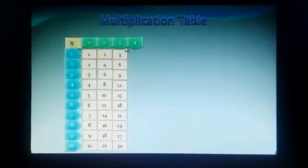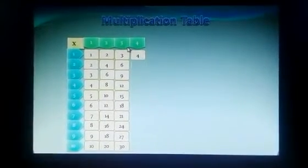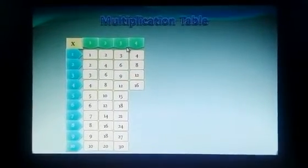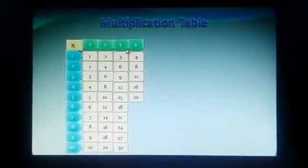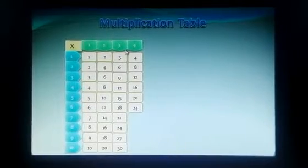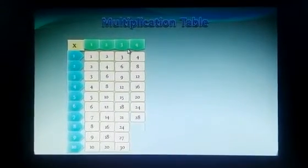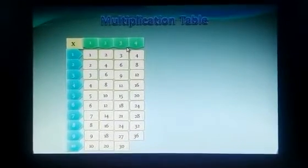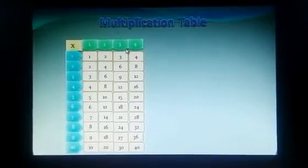Now, times table of 4. 4 times 1 is 4, 4 times 2 is 8, 4 times 3 is 12, 4 times 4 is 16, 4 times 5 is 20, 4 times 6 is 24, 4 times 7 is 28, 4 times 8 is 32, 4 times 9 is 36, 4 times 10 is 40.